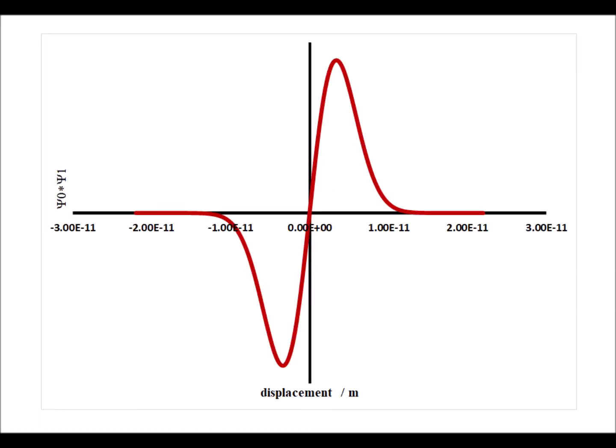Here we plot eigenfunction psi sub 0 times psi sub 1. We have psi0 star psi1, and we've shaded the region above the x-axis in dark and below it in light. We can see immediately by symmetry they are equal and opposite, giving an overall value of 0 for the area, demonstrating the orthogonality of those two eigenfunctions.